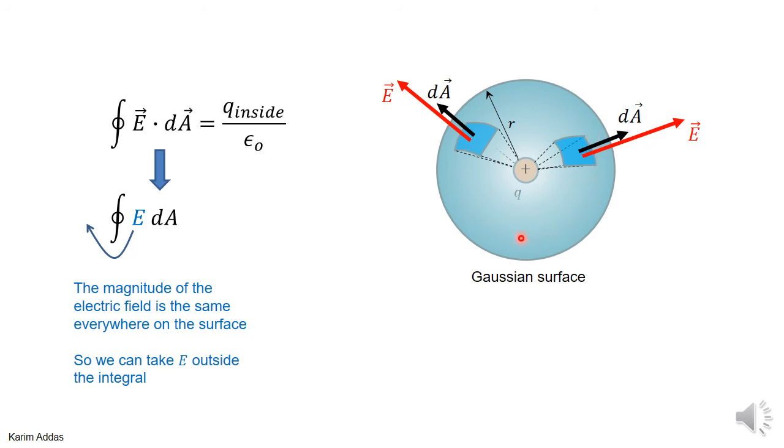There's no reason for the electric field value to be different over here than over here. Of course, the direction is different, but there's no reason for the magnitude to be different. So from symmetry, you can say that the electric field will have the same value. Even though I don't know what the value is, it's the same everywhere. So that's why I can take it outside of the integration.